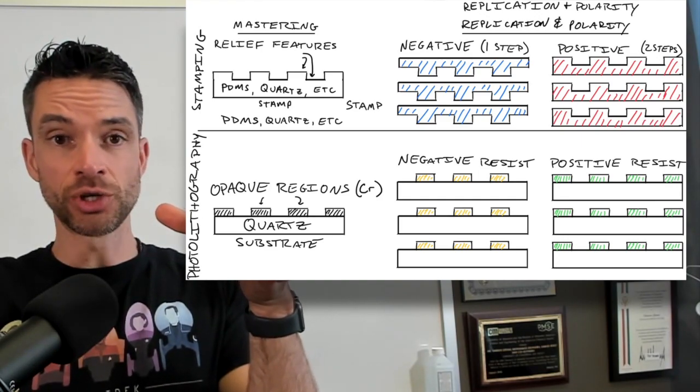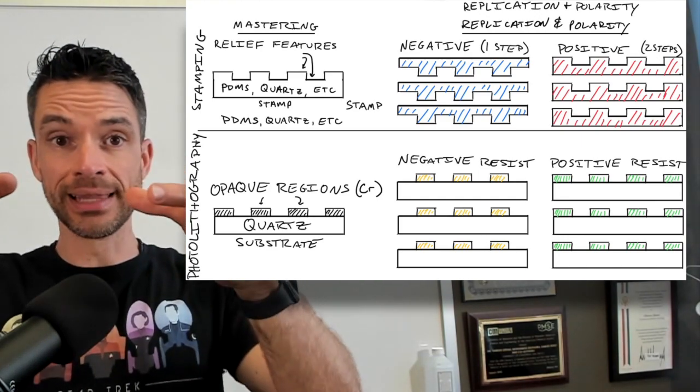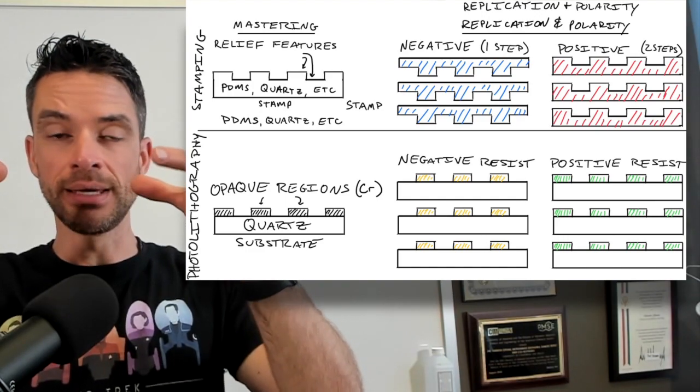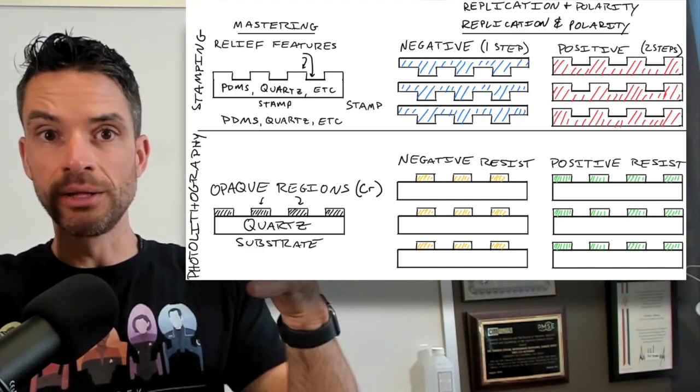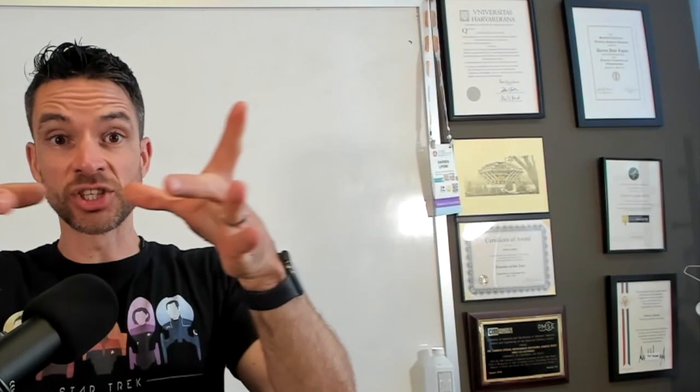And then you etch away an opaque layer. The opaque layer can be a metal film, and it's all sitting on a glass or more commonly quartz plate. And that quartz plate is what allows the light to pass through.